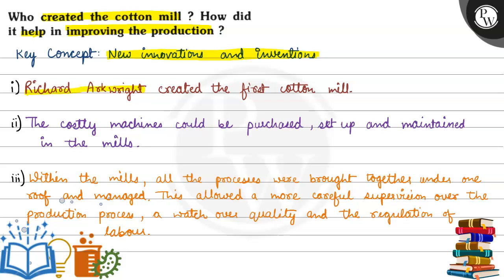Richard Arkwright created the first cotton mill. Second point is, the costly machines could be purchased, set up and maintained in the mills. Now, as cotton mills were created, it would be a boost to the industrialization process and the costly machines could be purchased, set up and maintained in the mills.